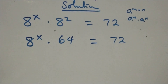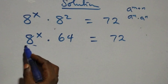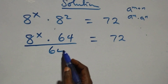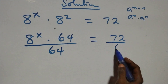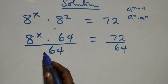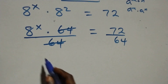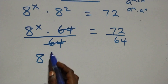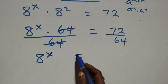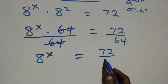At this next step, we divide each side by 64. We divide this side by 64 and also divide this side by 64. The 64s cancel each other, and we have 8 raised to power x equals 72 over 64.